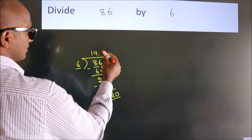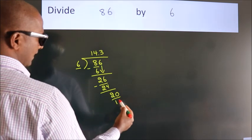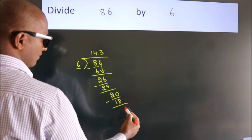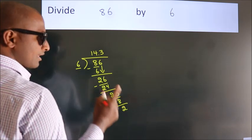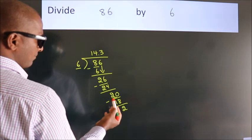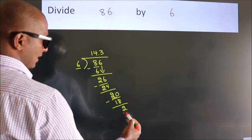...is 6 times 3, which is 18. Now we subtract. We get 2. Now you observe, we had 2 here and we got 2 again.